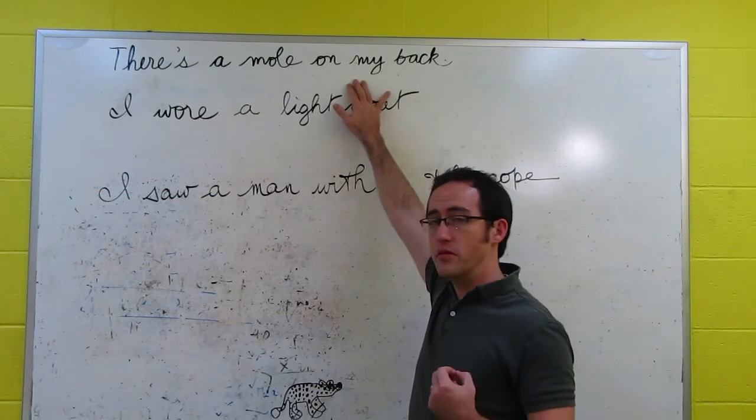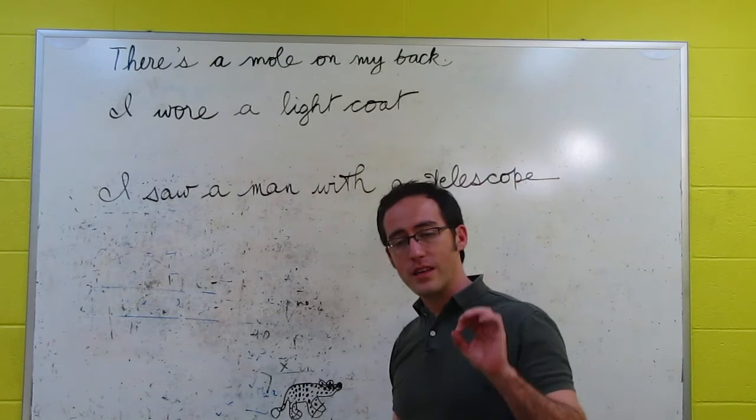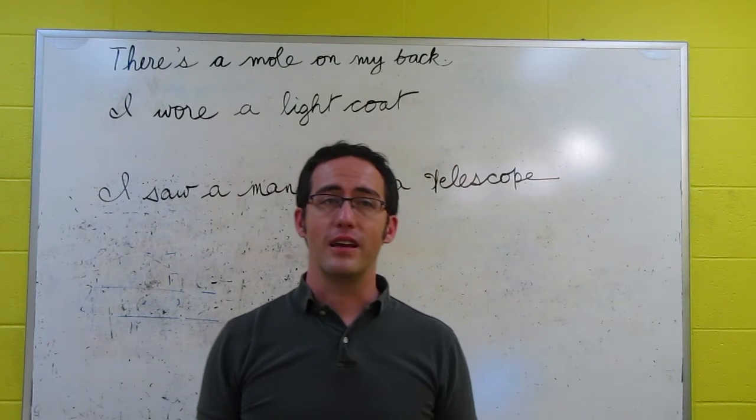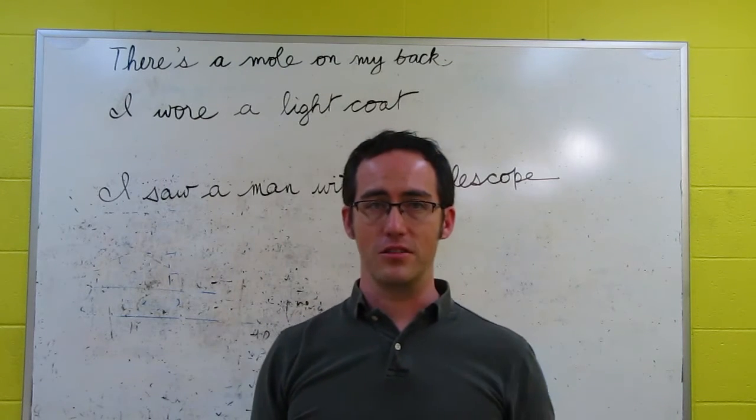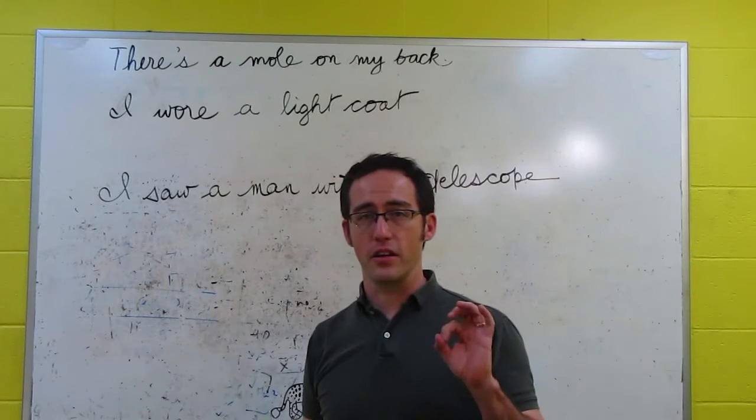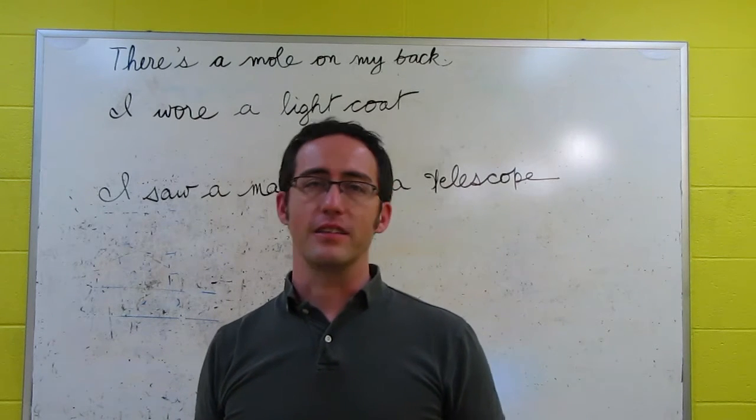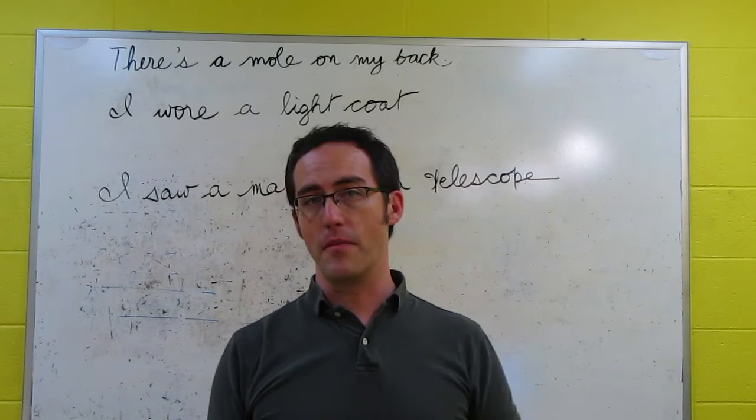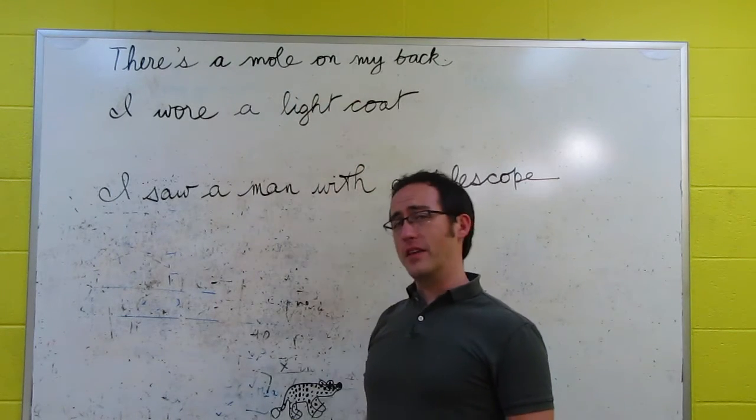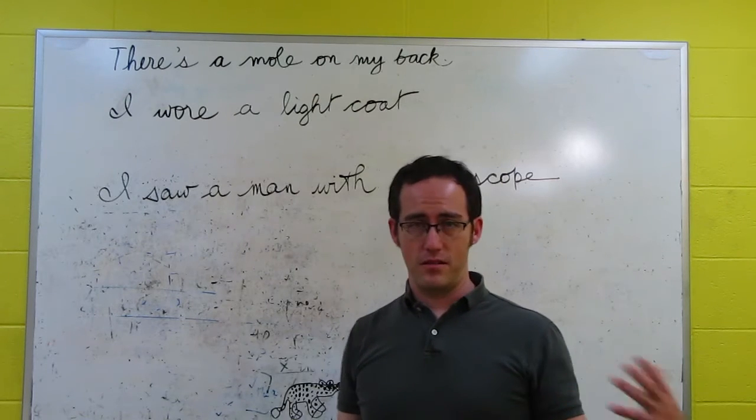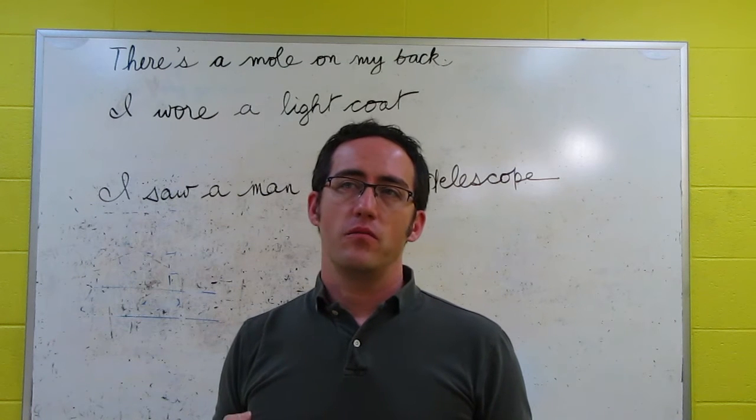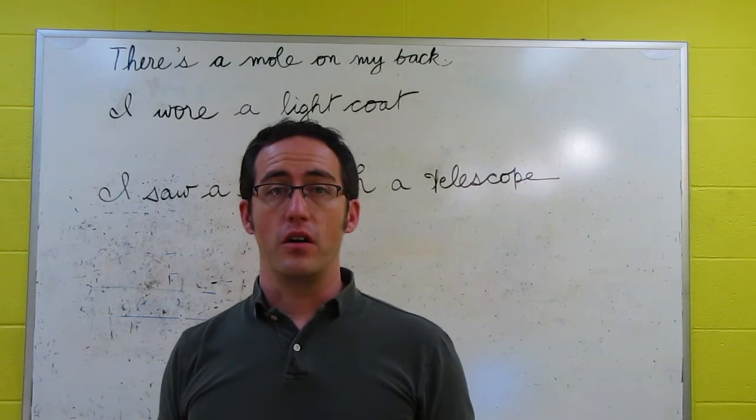And these will have different meanings. And when we say they have different meanings, of course, meaning is truth conditional. So what we're really saying is that they have different truth conditions. So if I say there's a mole on my back talking about the spot, then that's going to have certain truth conditions. Maybe there's a spot on my back. If I say there's a mole on my back talking about the animal, that's going to be a different set of truth conditions. And one of these can be true, one of these could be false.